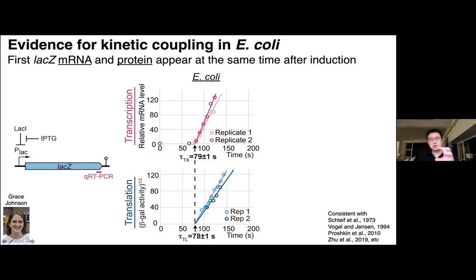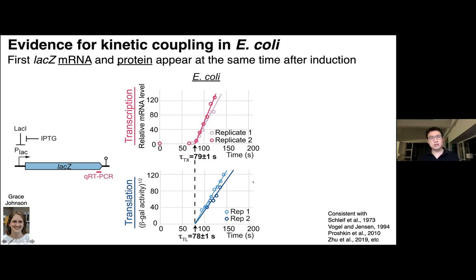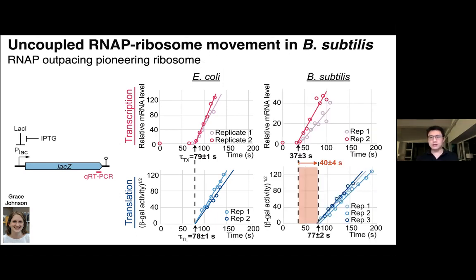If the ribosome is really close to the RNA polymerase as they move along the DNA, you should see the first protein products start to accumulate at the same time. We can look at how signal accumulates: after the first RNA is made, RNA accumulates linearly, and the number of proteins per RNA also increases linearly, so the whole thing increases quadratically. Extrapolating back to zero activity gives the time of the first full-length proteins being made. In E. coli, Grace confirmed many years of prior work showing that by the time the first full-length RNA is made, the first protein is made at the same time.